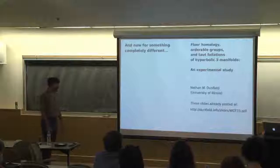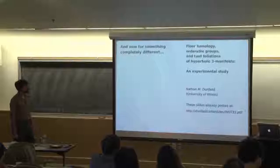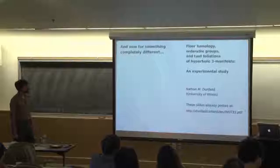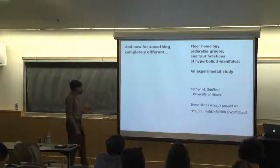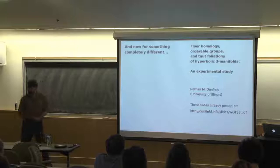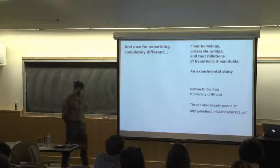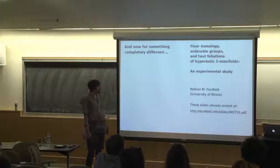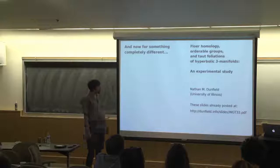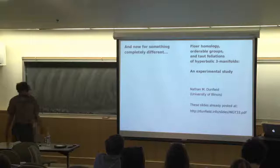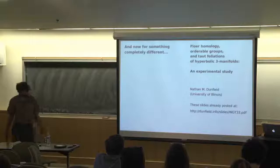Floer homology is something that comes out of gauge theory and symplectic geometry, and from there out of mathematical physics. It had huge impact on the study of four-manifolds in the 90s — work of Donaldson, Seiberg-Witten variants, and so on. Although there was always a parallel theory for three-manifolds, there weren't many results, perhaps because we knew more going in about three-manifolds. You have to work harder with a new tool before it becomes useful.